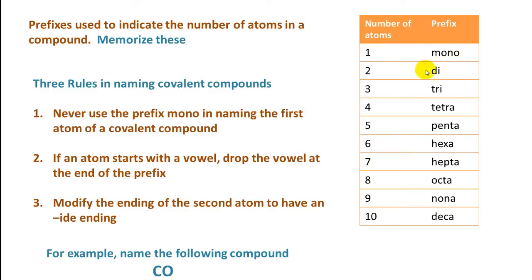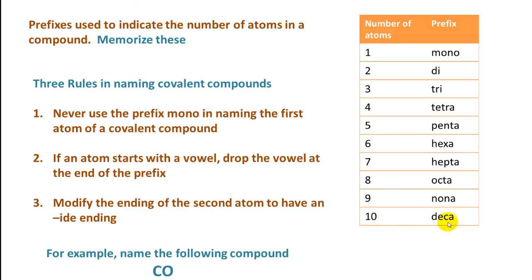You need to memorize these. For one atom, the prefix is mono. Two atoms: di. Three atoms: tri. Four: tetra. Five atoms: penta. Six atoms: hexa. Seven atoms: hepta. Eight atoms: octa. Nine atoms: nona. And ten atoms: deca.